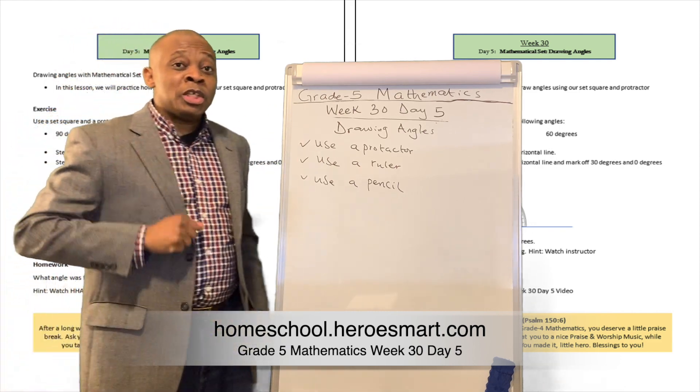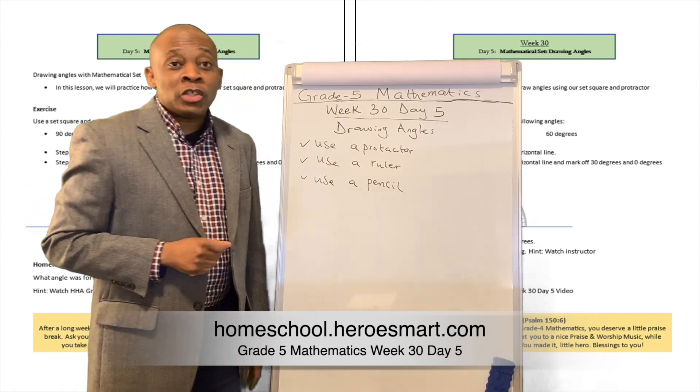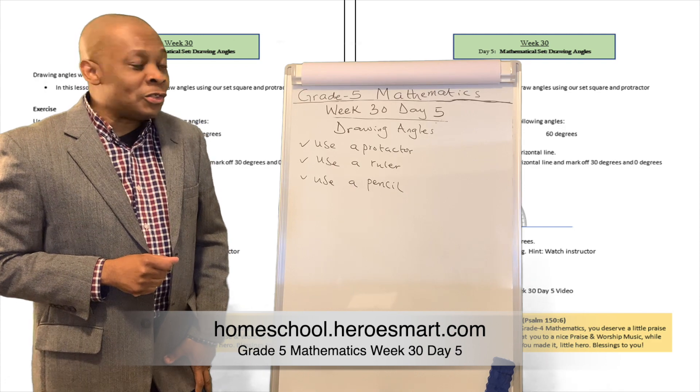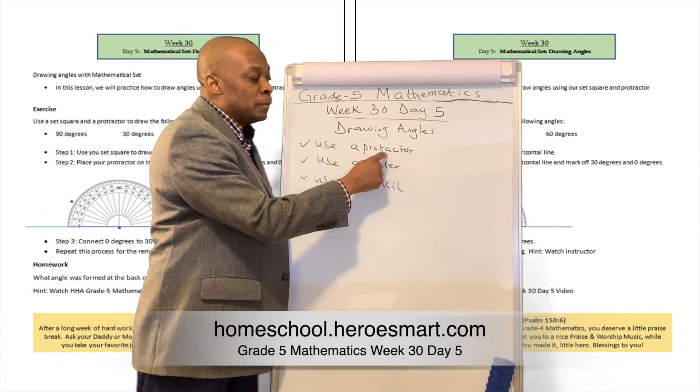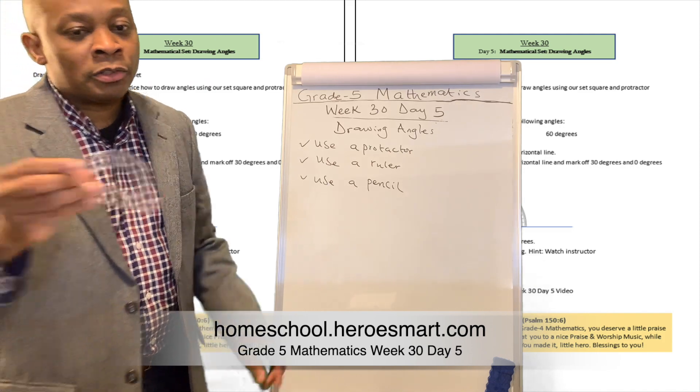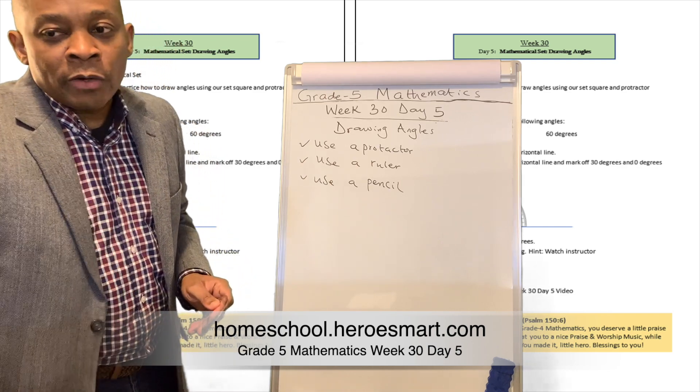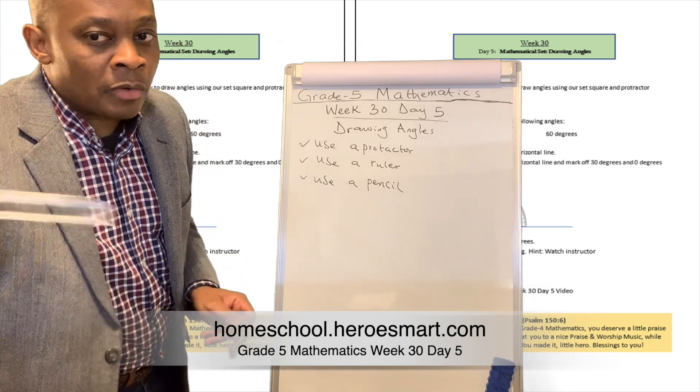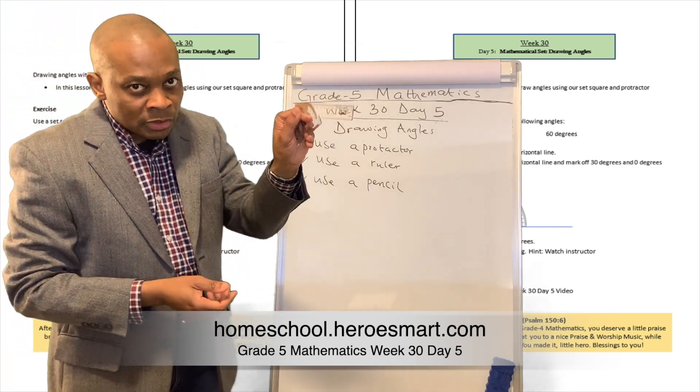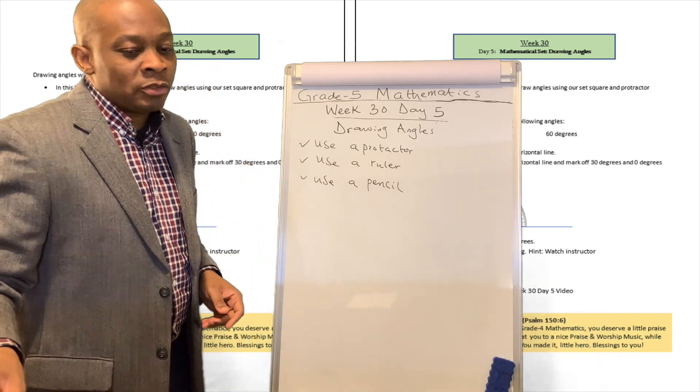Now, one of the things we can use our mathematical set to do is to draw angles. And which instrument are we going to be needing to do that? We're going to need a protractor. Remember what a protractor is? This is going to be like the protractor over here. You're going to need a protractor, you are going to need a ruler, and of course, you are going to need a pencil. So let's try to do that exercise.